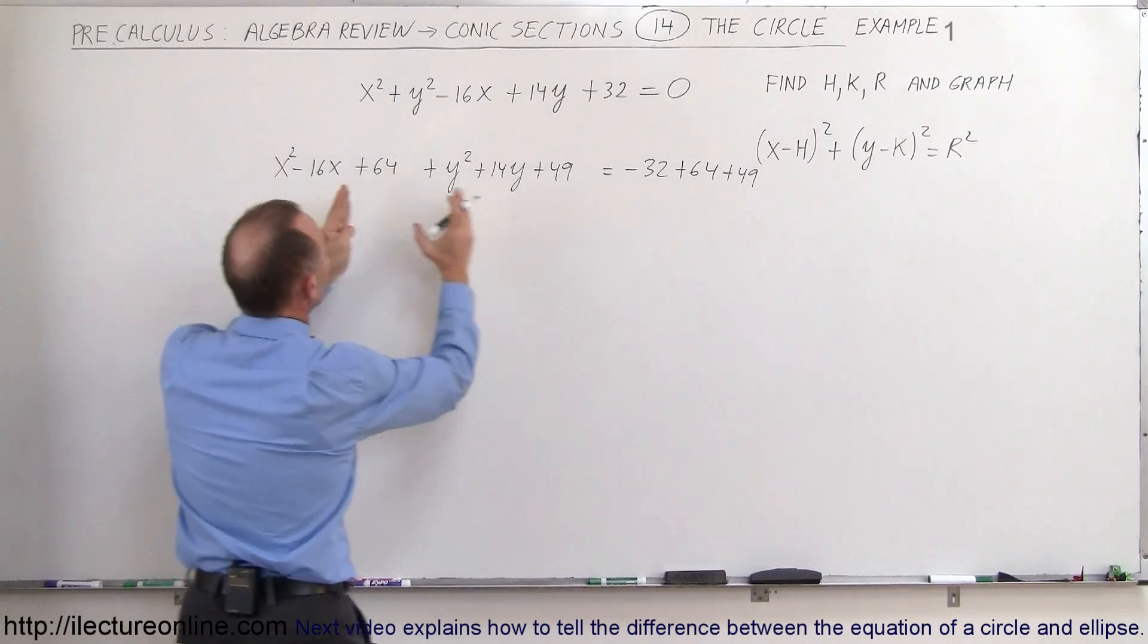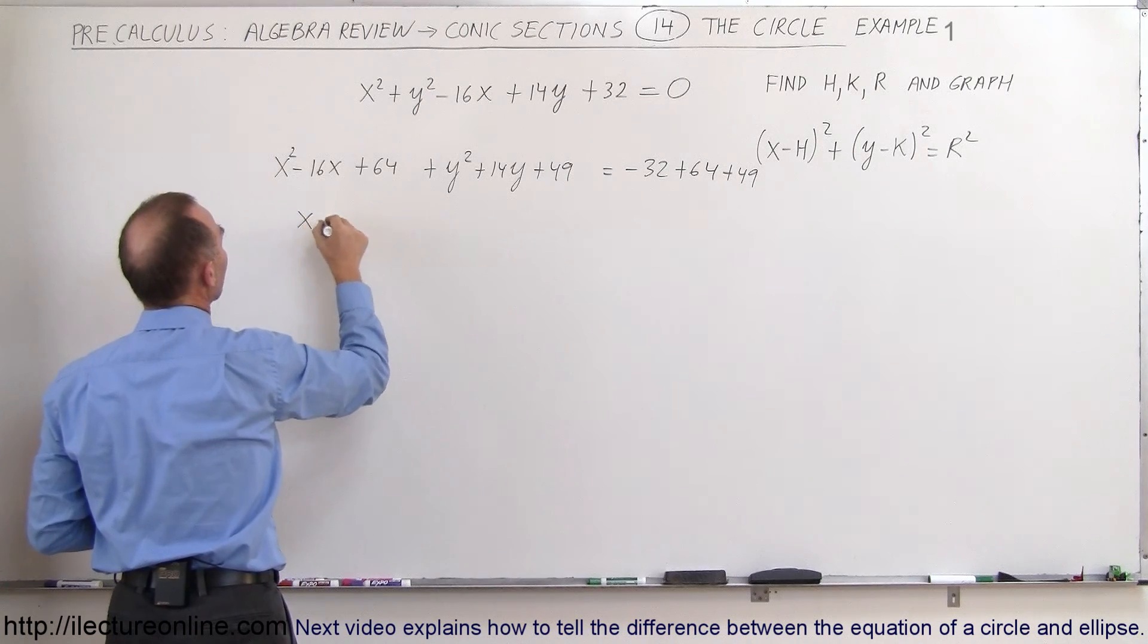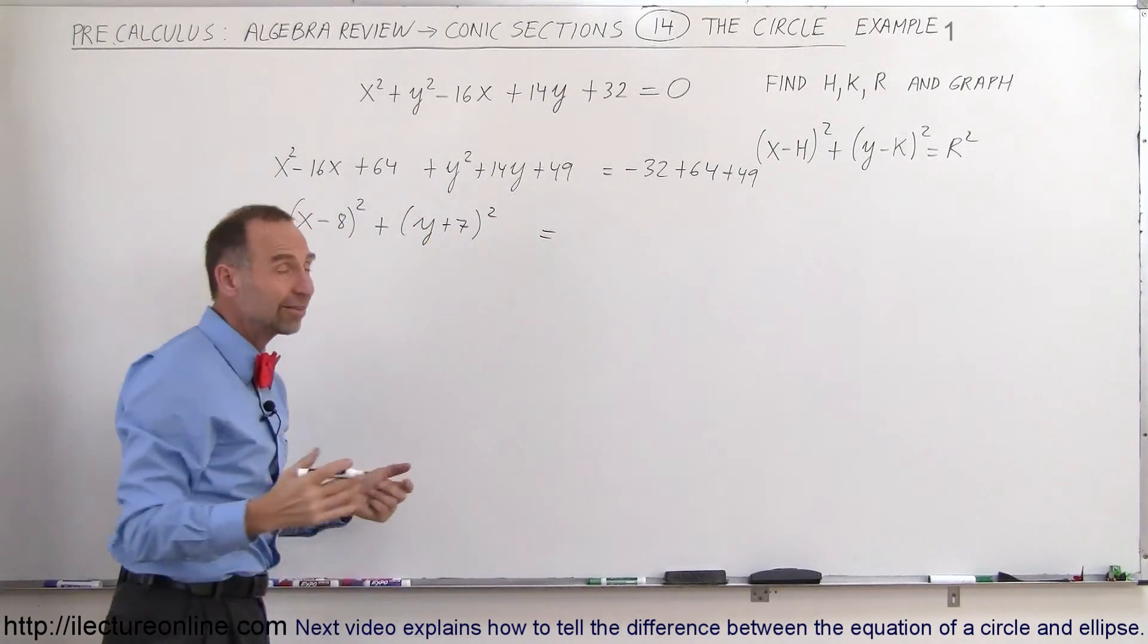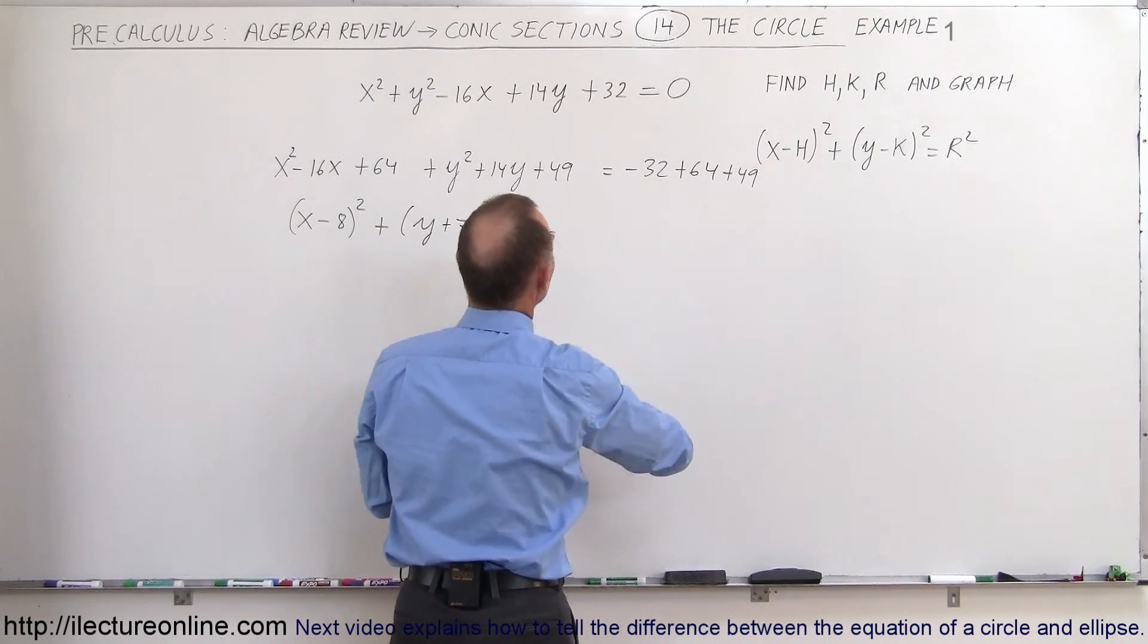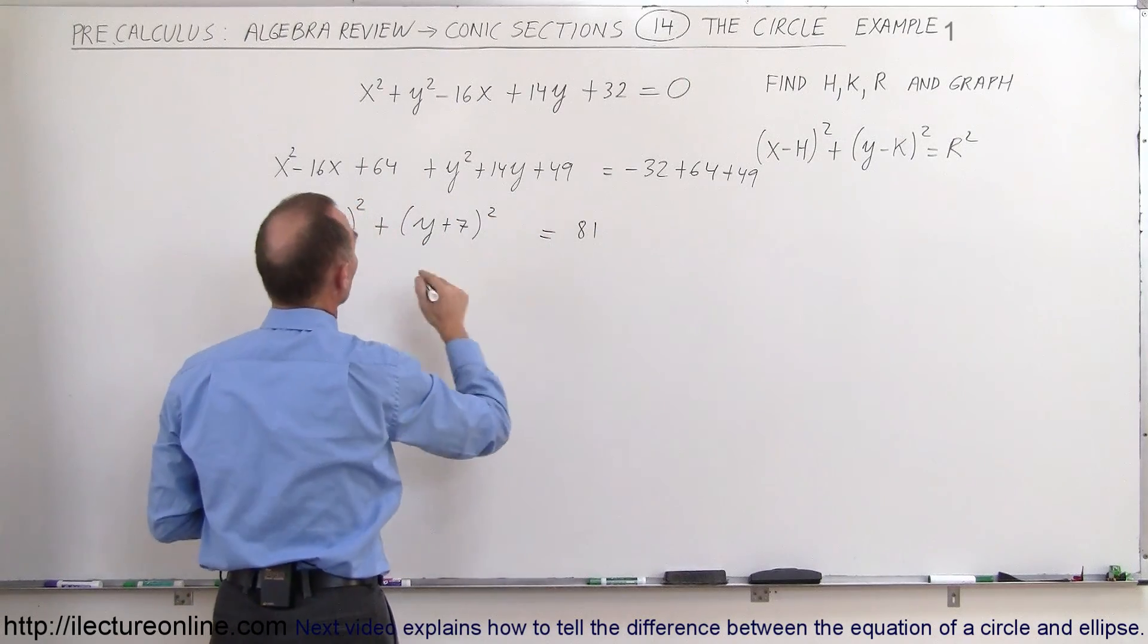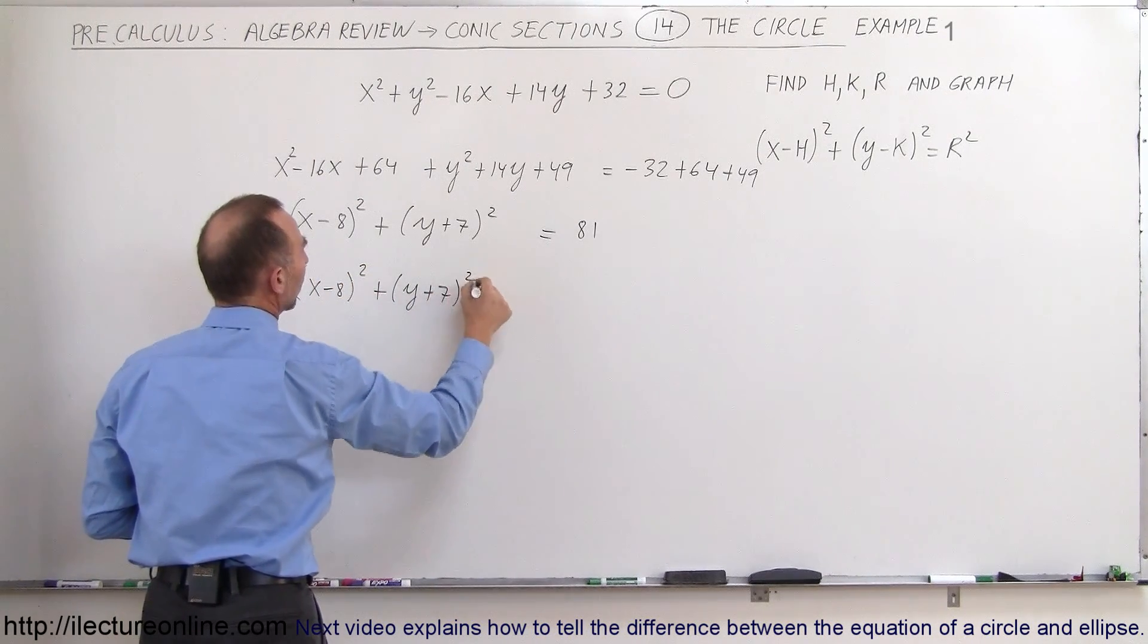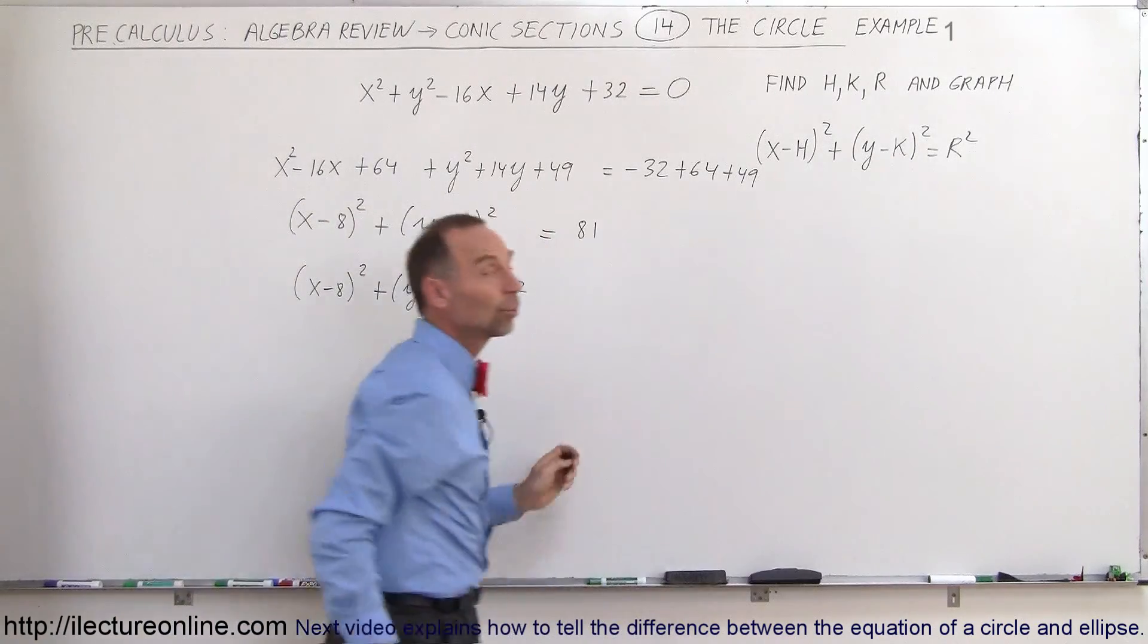This is a perfect square, this is a perfect square. You could write them as two binomials squared. So this becomes x minus 8 quantity squared plus y plus 7 quantity squared equals, and the right side simplifies. That's a plus 32 added to this, that would be plus 81. We can write this as r squared, so this can now be written as x minus 8 quantity squared plus y plus 7 quantity squared equals 9 squared.